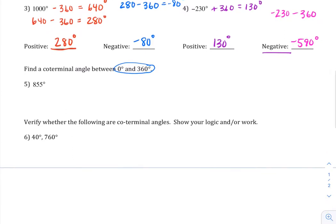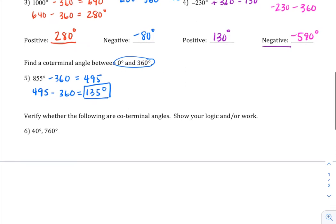So 855, I want to find a coterminal angle, but between 0 and 360 degrees. So I'm just going to keep subtracting 360 until I get to a number that is between 0 and 360. All right, so 495. I can go a little lower. That's still more than 360. So I'll subtract another 360. And I get 135 degrees. So there's my angle that's coterminal between 0 and 360.